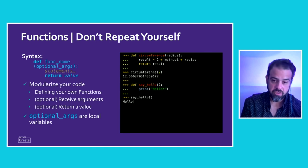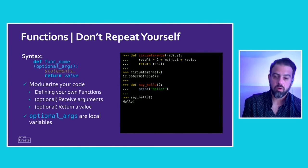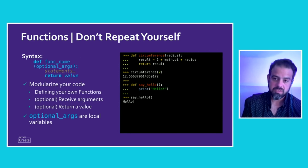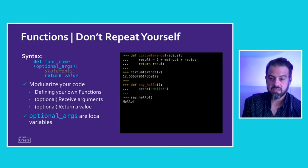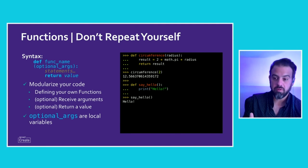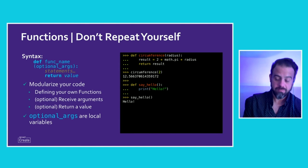We saw an example of functions earlier. The principle is: don't repeat yourself — if you're going to do something more than once, put it in a function. Functions, like conditionals and loops, are defined by indentation. They can accept arguments. For example, a circumference function accepting a radius argument performs 2πr to return the circumference. Functions are a way to create reusable code — if you do something twice, put it in a function and call it.